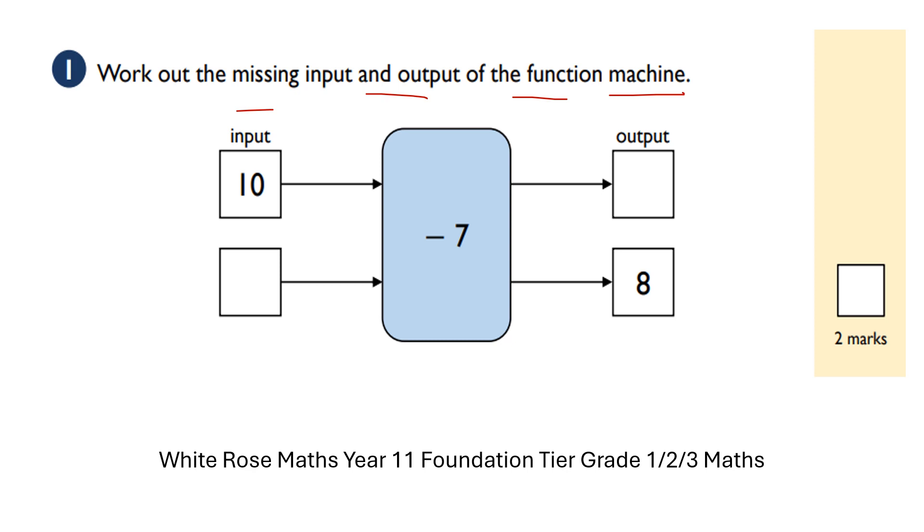So do 10 subtract 7. 10 minus 7 is going to be 3. But the second part, I'm given the output, so I'm going to go backwards. What's the opposite of subtracting 7 or minus 7?